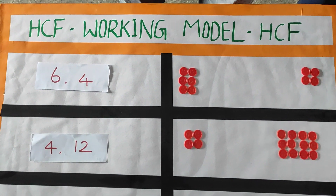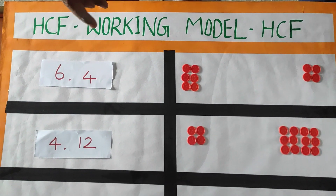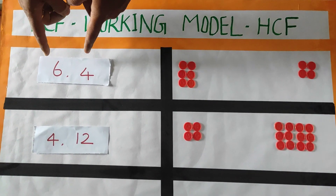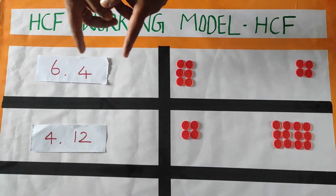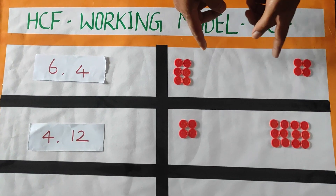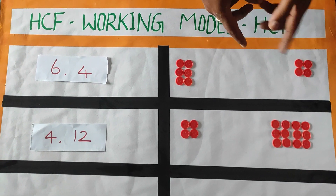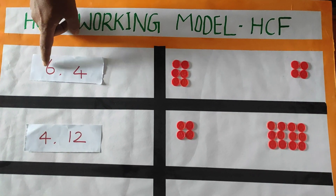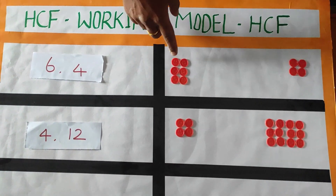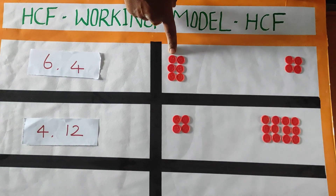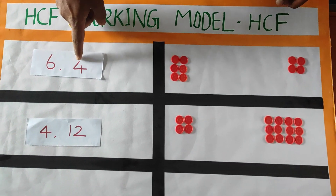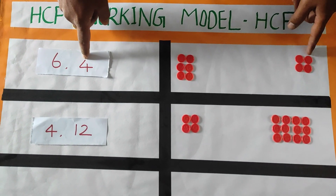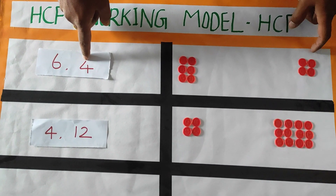First we have to follow some steps. Step 1: see the number, and according to that you select and take the marbles. Here we have the number 6, so you take 6 marbles, and next we have 4, so you take 4 marbles.